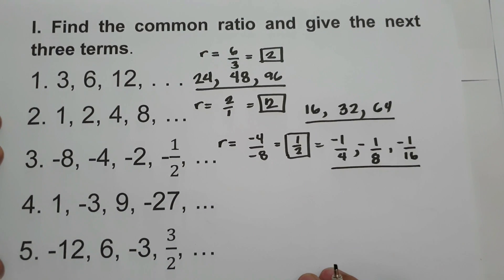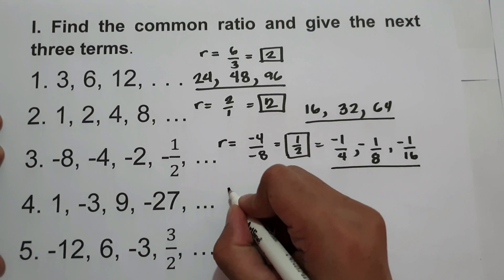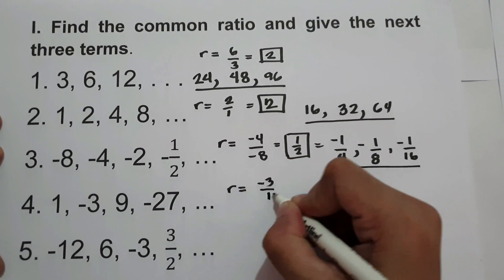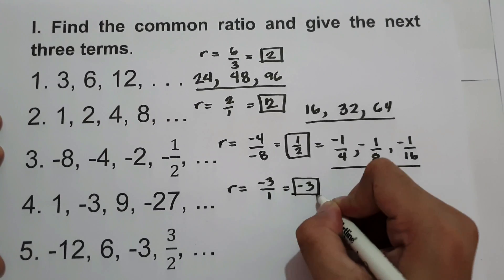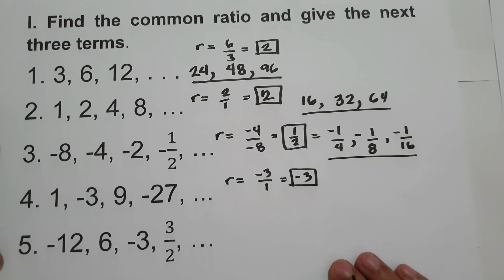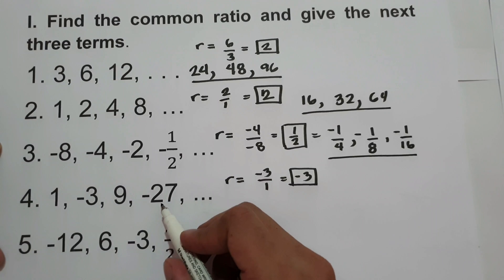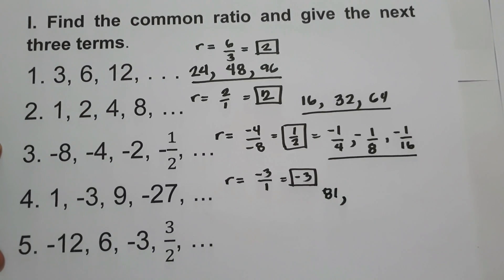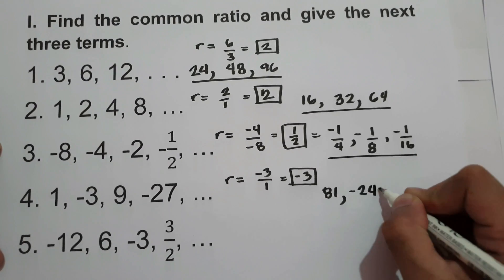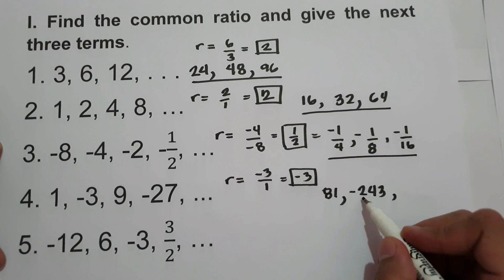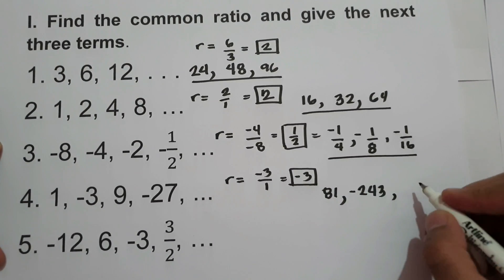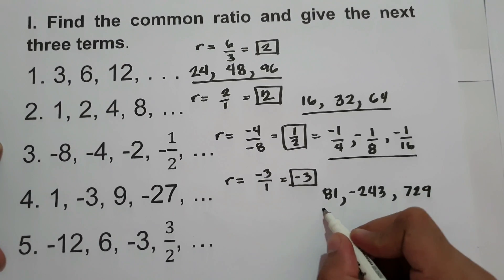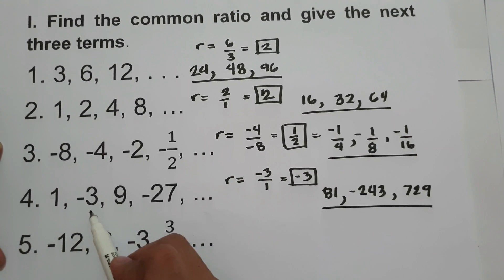What about number 4? We have 1, negative 3, 9, negative 27. To find the common ratio, divide negative 3 by positive 1 — the answer is negative 3. So the common ratio is negative 3. Now let us find the next 3 terms: negative 27 times negative 3 is positive 81; positive 81 times negative 3 is negative 243; and negative 243 times negative 3 is 729. So these are the next 3 terms of the sequence 1, negative 3, 9, negative 27.